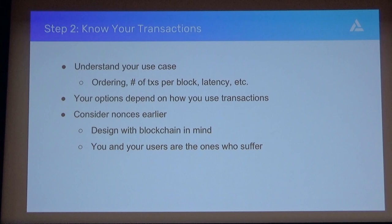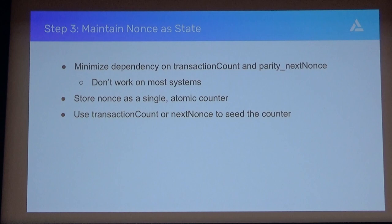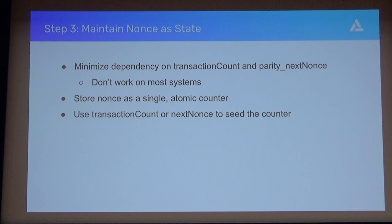One plea: consider nonce issues earlier on in smart contract development. There are trade-offs in doing this. A lot of people don't end up getting nonce problems until things are deployed and they have users who start to complain. So start thinking through these problems early and you'll have a better time later on. As far as actual solutions: maintaining nonce state is super, super helpful. That way you can minimize your dependency on API calls that tend to have their own set of problems. You can store a nonce as a single atomic counter in something like Redis—all of your services can access and increment it. And when restarting, you can use those API calls to get the transaction count and sanity check.